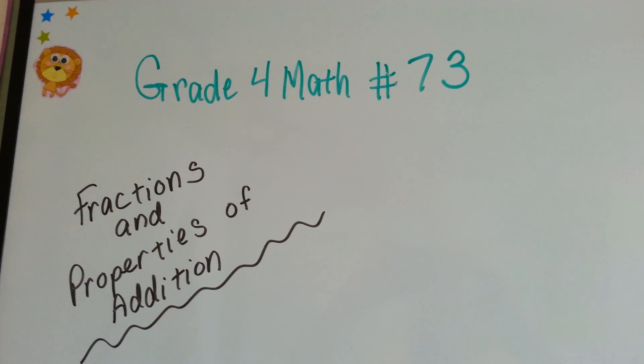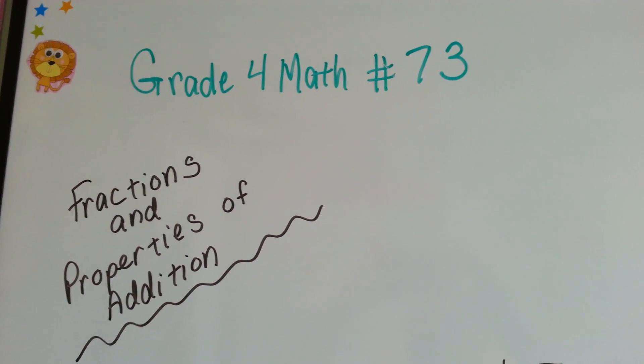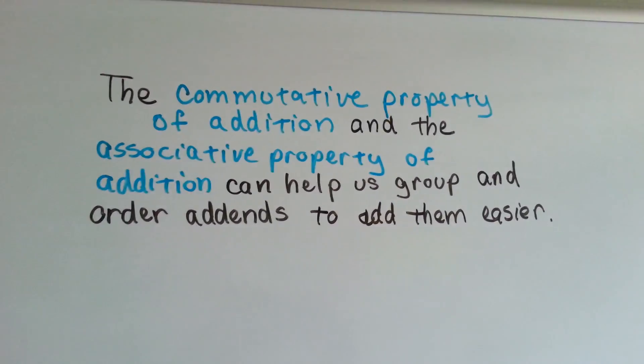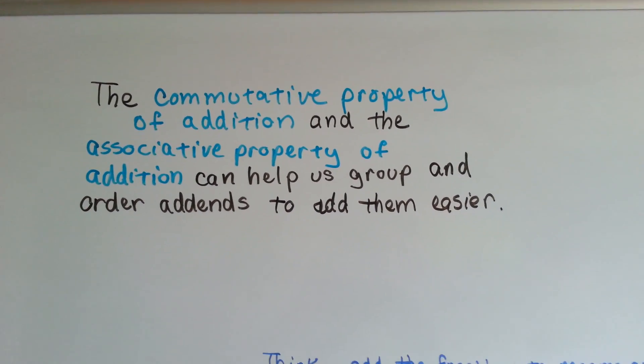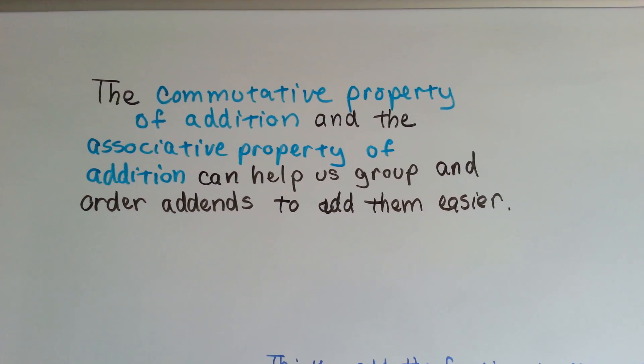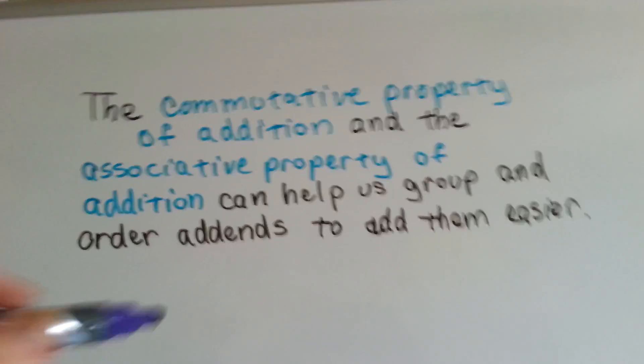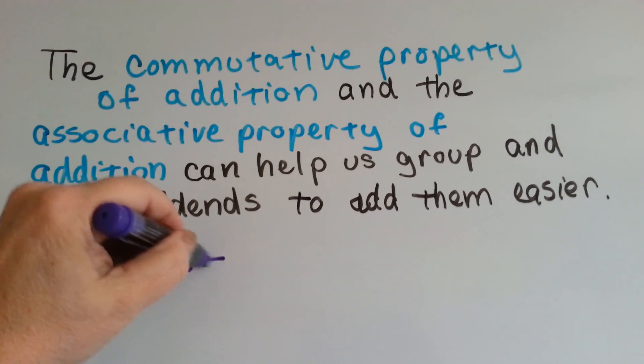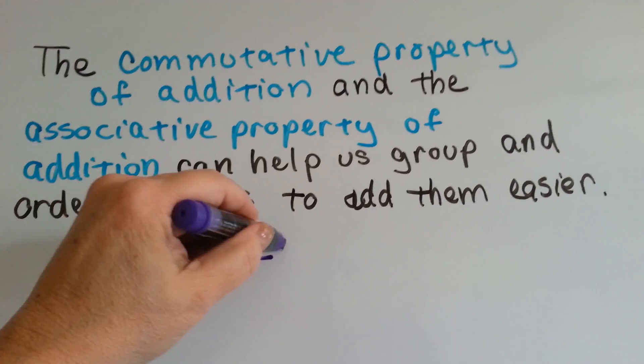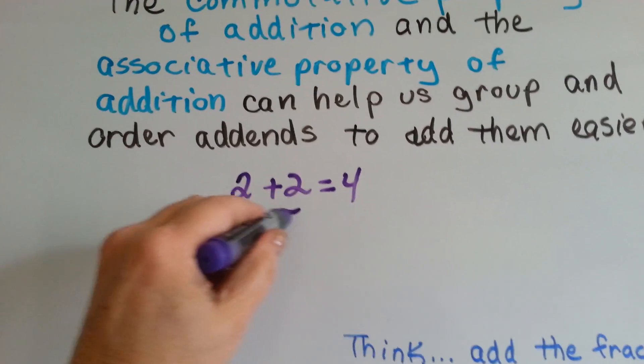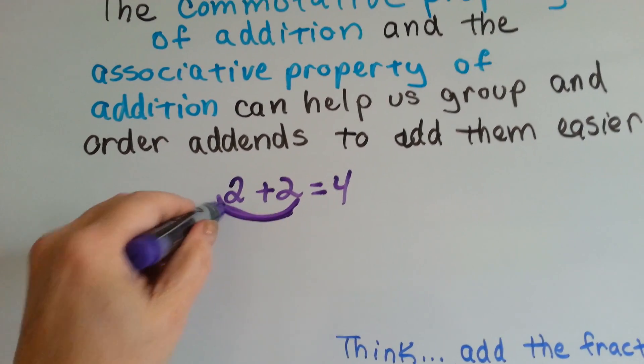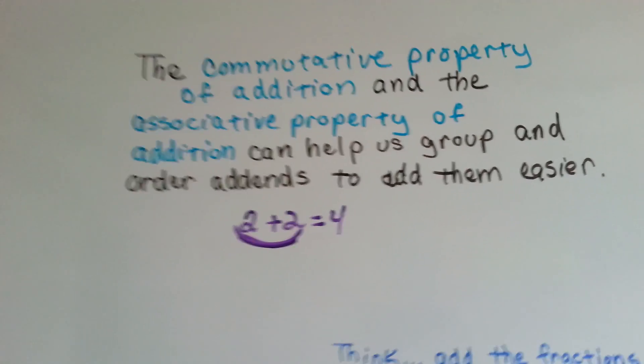Grade 4 math number 73, Fractions and Properties of Addition. The commutative property of addition and the associative property of addition can help us group and order addends to add them easier. Remember, an addend is what you add together to get a sum. These are the addends right here, and then the 4 is the sum.